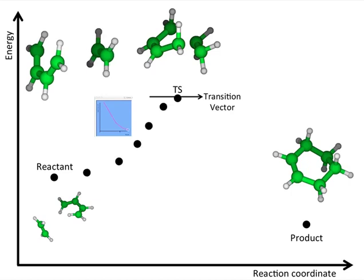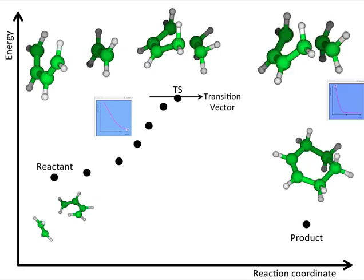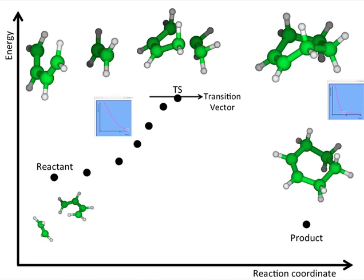In this case, we obtain a series of points and relative energies and structures. Or we can move forward with respect to the transition vector and we move towards the product. And again, we obtain a series of energies and structures.